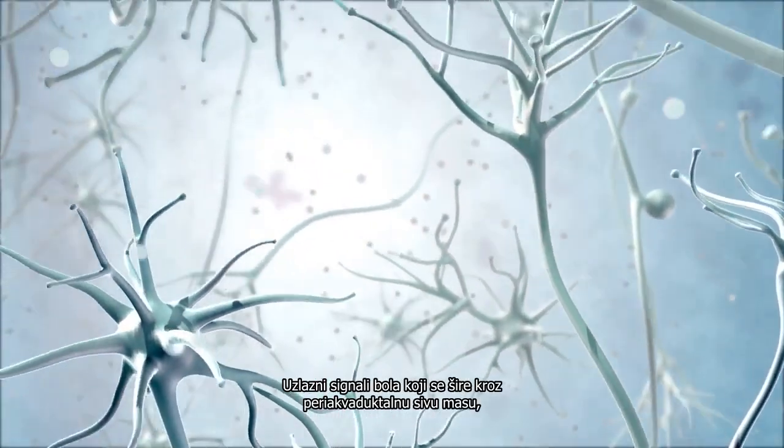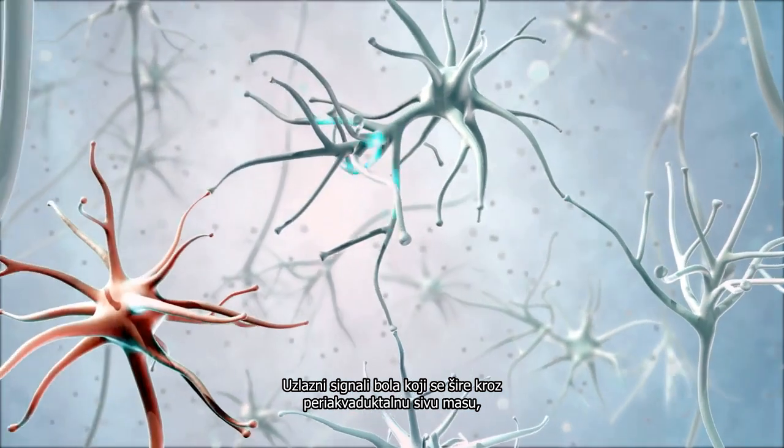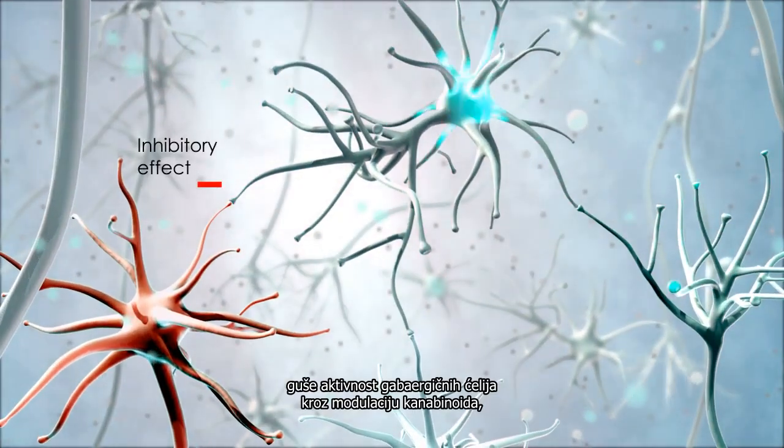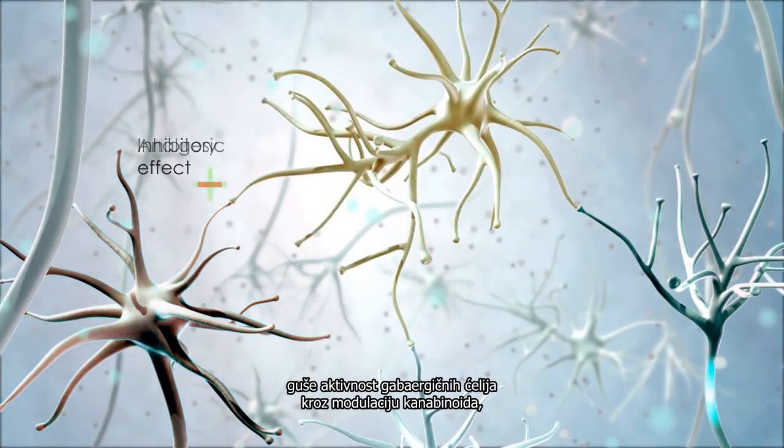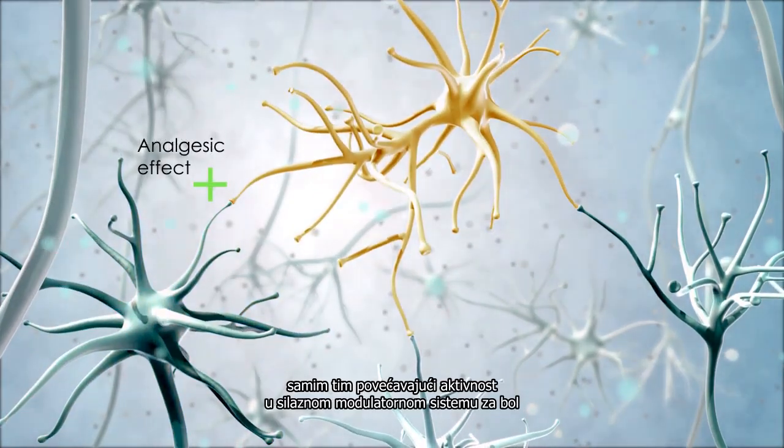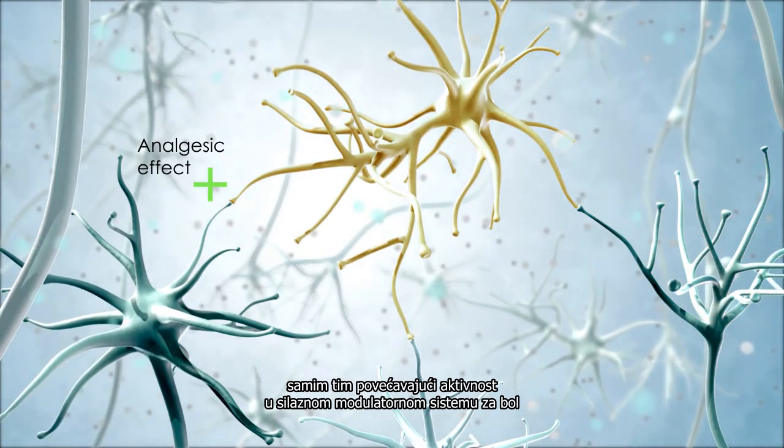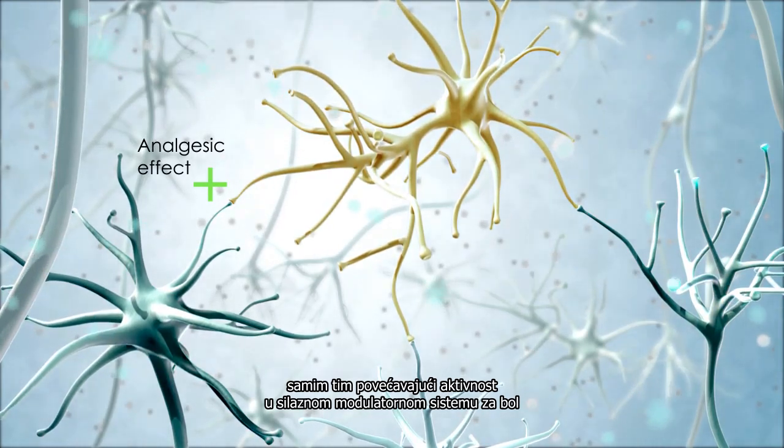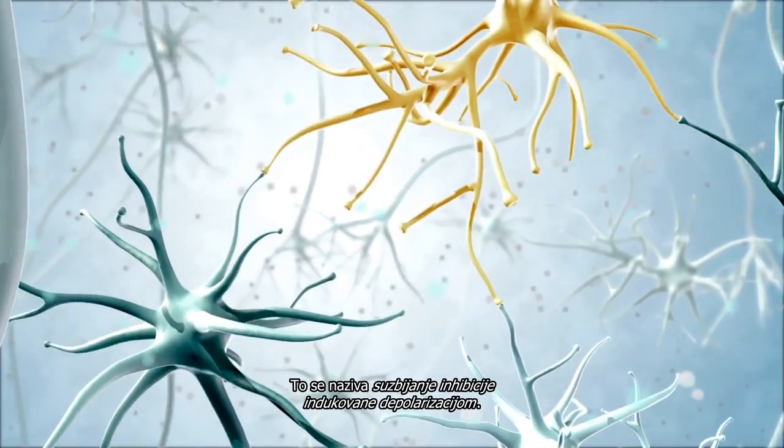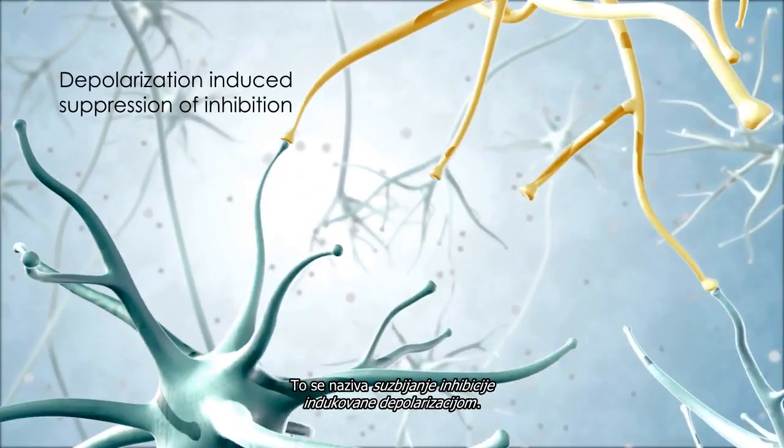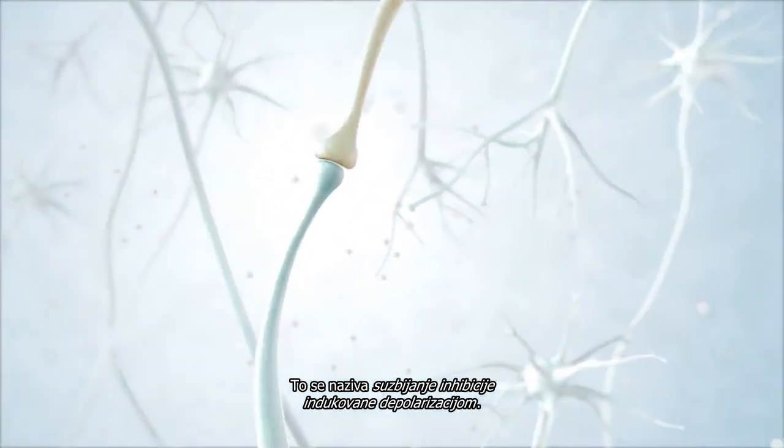Ascending pain signals relayed through the periaqueductal gray suppress the activity of GABAergic off cells through cannabinoid modulation, thereby increasing activity in the descending pain modulation pathway and increasing the analgesic effect. This is called depolarization-induced suppression of inhibition.